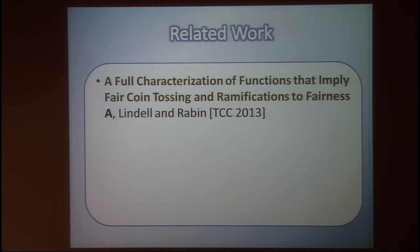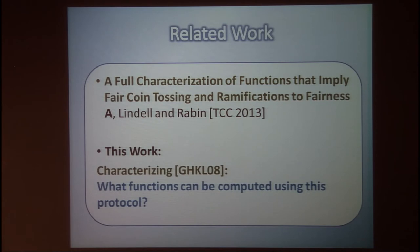We had two works on this topic, including one at TCC last year. Together with my advisor, we focused on Cleve's impossibility and tried to rule out which functions imply fair coin tossing. We found some property on the truth table such that if the function satisfies it, it implies fair coin tossing and is therefore impossible to compute fairly. In this work, we focus on the positive result of GHKL and perform a deeper analysis on their protocol to understand exactly which functions can be computed using it.